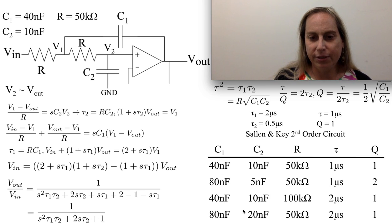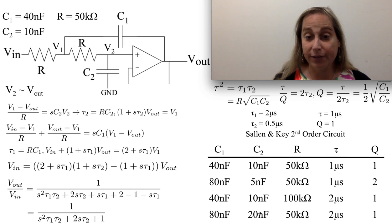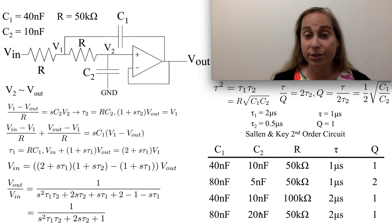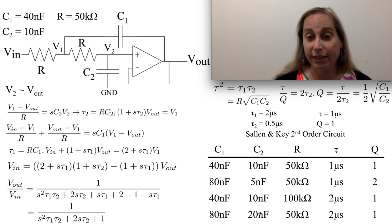And then of course, taking C1 and C2 and both scaling them up by a factor of two changes the tau as well. So it gives you a sense of the different tradeoffs and possibilities with these circuits. And there's a whole range of things that you could imagine doing with this kind of structure. This particular form is called a Salen-Key second order circuit, and it's a very common circuit used in a whole range of different applications.